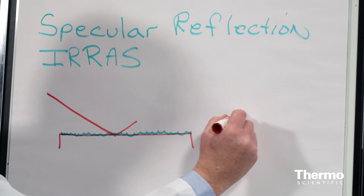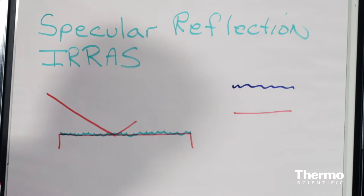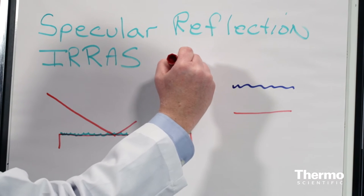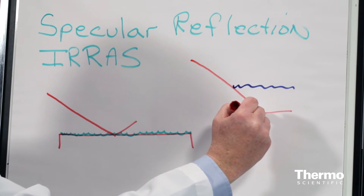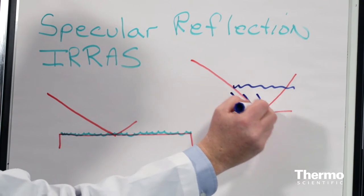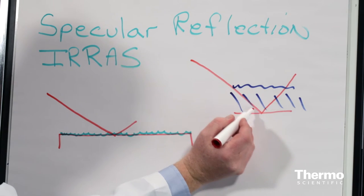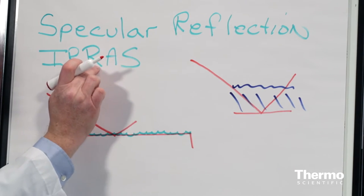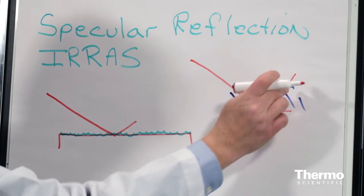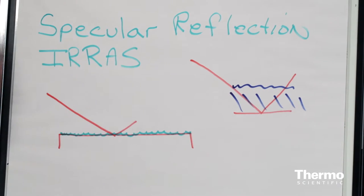If we enlarge that point right there where the surface is, and then the sample on the surface, then the infrared beam is passing down through the sample and back out. Remember, this is all a coating, so the beam is passing through it twice. This is why it's called reflection absorption, because it's reflecting and it's being absorbed. The path length is both passes through the sample.